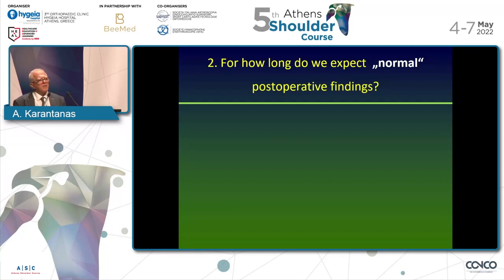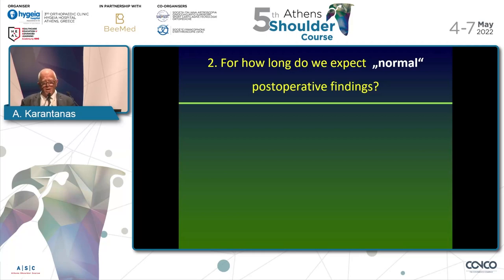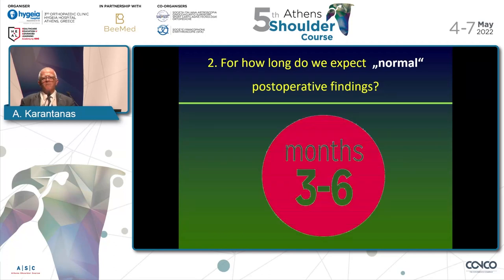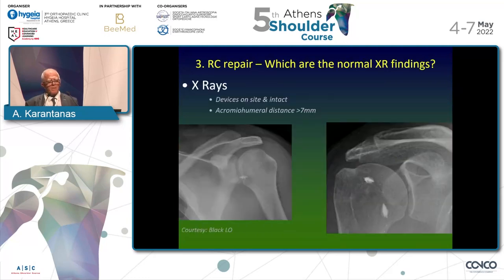Following a surgical procedure, we have edema and hemorrhage, and we have abnormal signal within the tendons or muscles. Therefore we have to know that we are expecting the normal or so-called expected post-operative findings, and these occur up to three or six months post-operatively. At about 12 months post-operatively, we have normal signal back in the tendons.